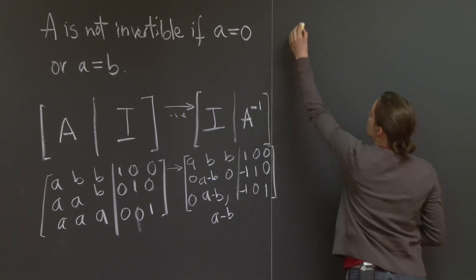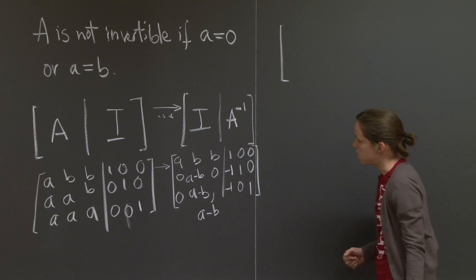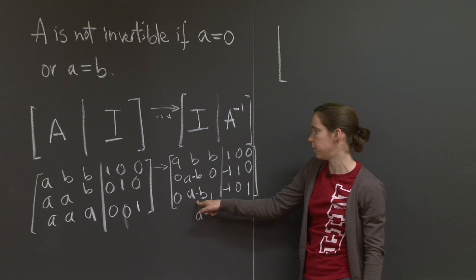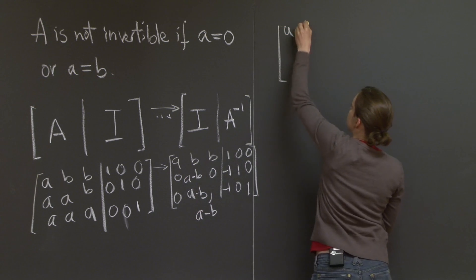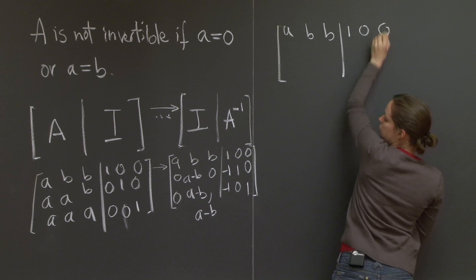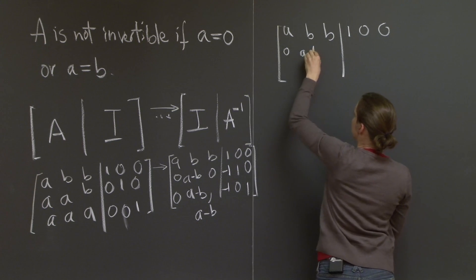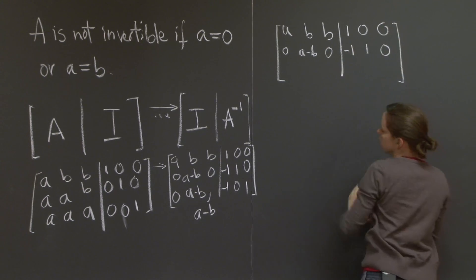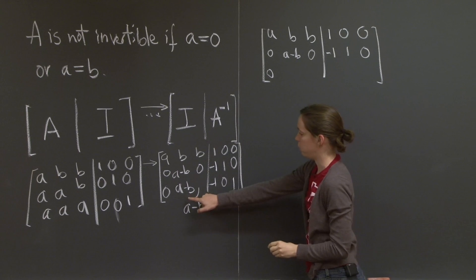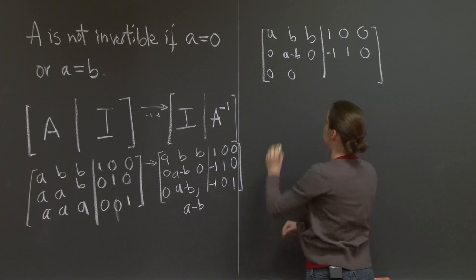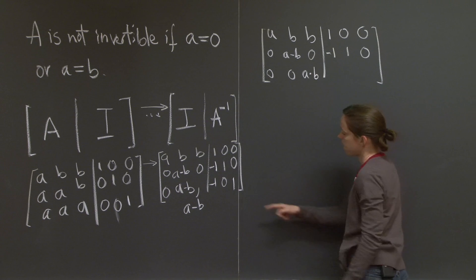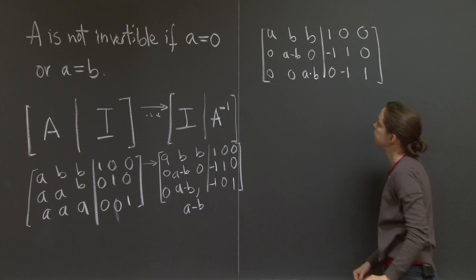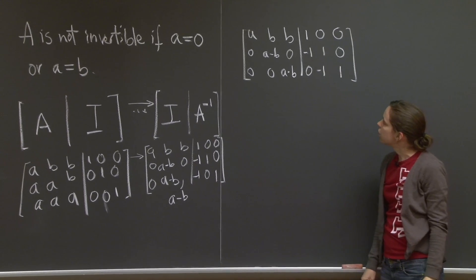Let's continue up here. Now I want to eliminate this a minus b. I want to turn it into a 0. So the first row stays the same. A, b, b, 1, 0, 0, 0, a minus b, 0, minus 1, 1, 0. And now 0 minus 0, a minus b minus a minus b is 0. A minus b minus 0, that's easy. Minus 1 minus minus 1, 0 again. Minus 1 minus 1, minus 1, and 1. Almost there.